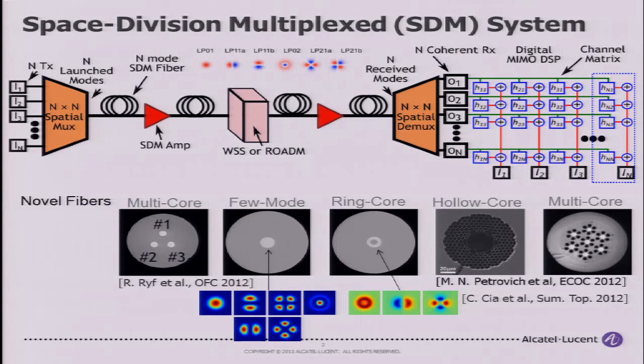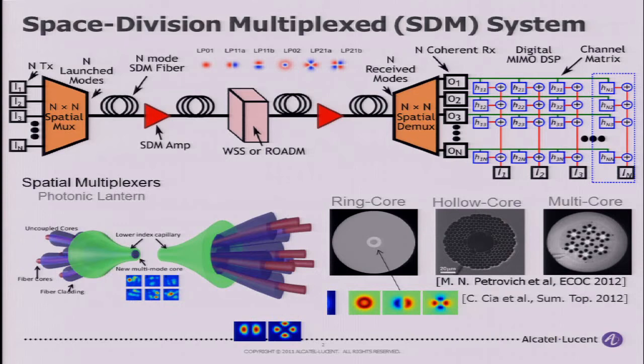To get on to these fibers, we need spatial multiplexers. In this talk, I'll show a photonic lantern spatial multiplexer, and we also need some routing elements — I will show a wavelength switch.